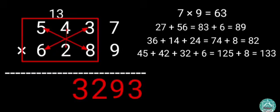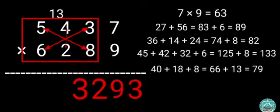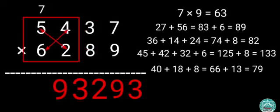Step 5: Multiply 5 by 8, 6 by 3, and 4 by 2, then add. 40 plus 18 plus 8 equals 66. Then add 66 and 13 that's carried forward. 66 plus 13 equals 79. Write 9 before 3 and carry forward 7.